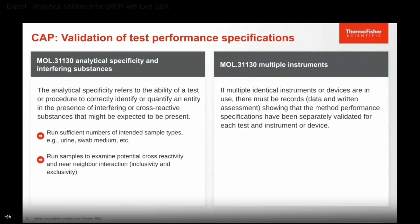In terms of analytical specificity and interfering substances, it refers to the ability of a test to correctly identify or quantify an entity in the presence of interfering or cross-reactive substances that might be expected to be present. Running sufficient numbers of samples of your intended sample type is key. You want to examine potential cross-reactivity and near-neighbor interaction to establish inclusivity and exclusivity. When it comes to multiple instruments, even if they are identical, there must be records showing the exact serial number that each instrument was separately validated.